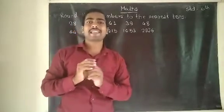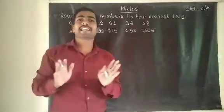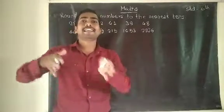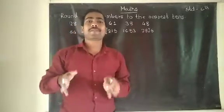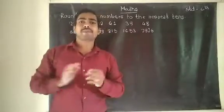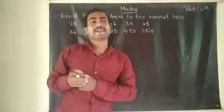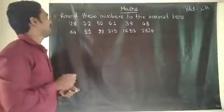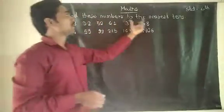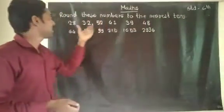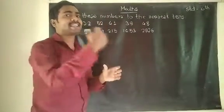Today we are taking examples to find the nearest tens number. How do we find the nearest tens? The example is given on page number 19. So in your books, page number 19, there is an example. Here I will write the example. Round these numbers to the nearest tens. Some numbers are given and we have to write the nearest tens number.